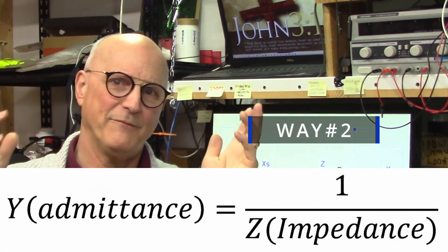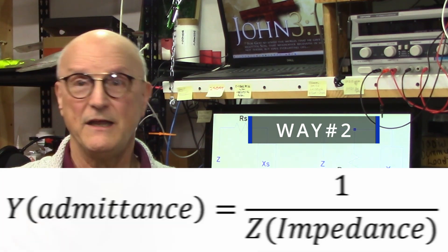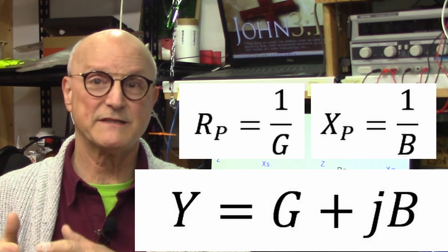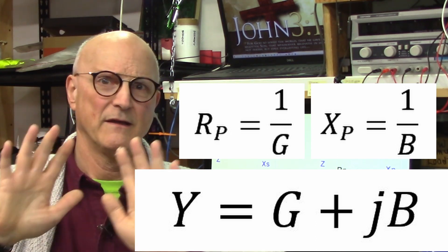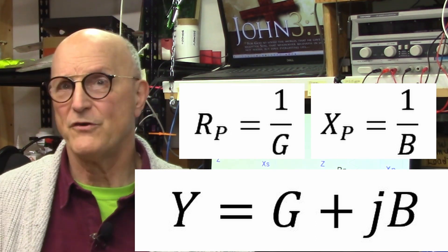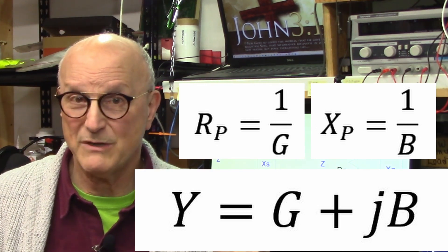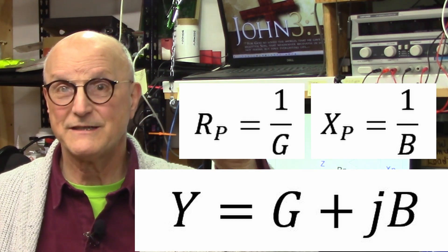Or you could translate the impedance to admittance, then individually translate the conductance and susceptance to resistance and reactance. I'm not going to do this here. If you're interested in this, then I encourage you to check out the math document that I've provided. The link is in the description.